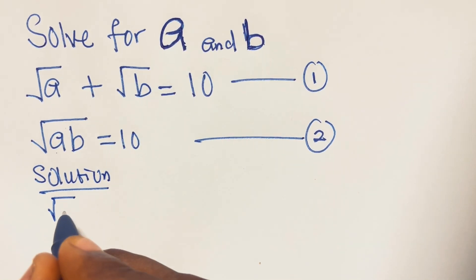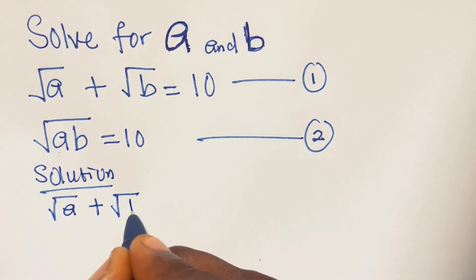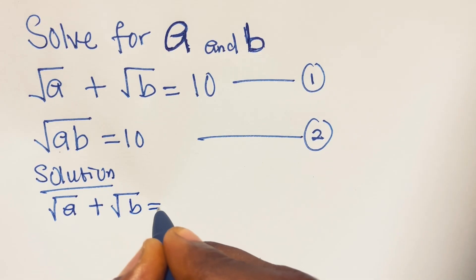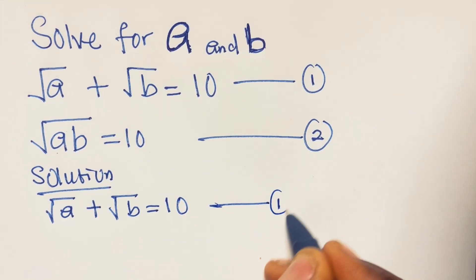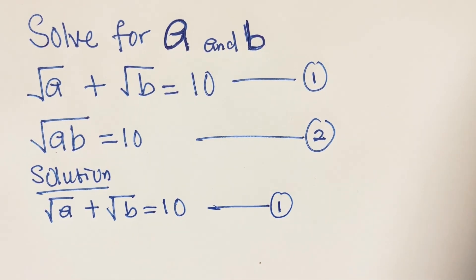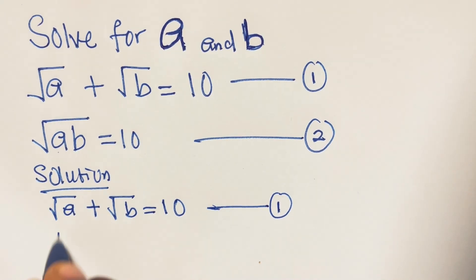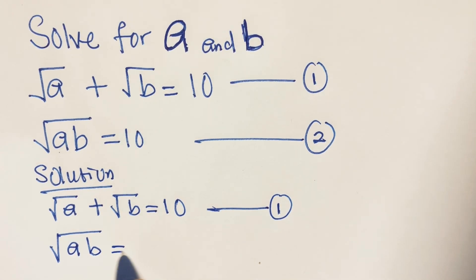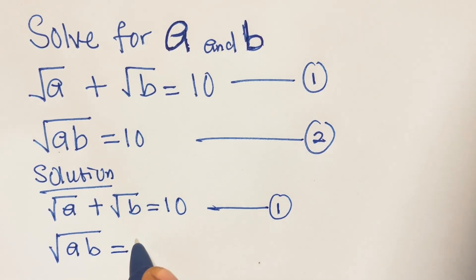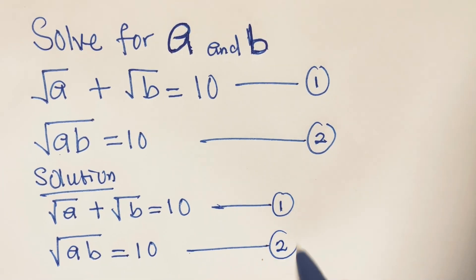We have square root of a plus square root of b equals 10, equation 1, and square root of ab equals 10, that is equation 2.